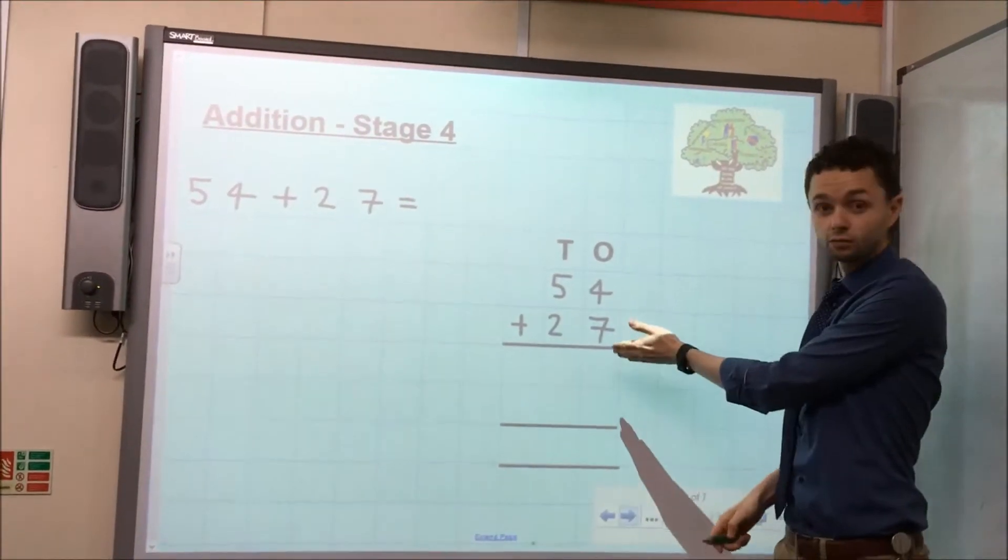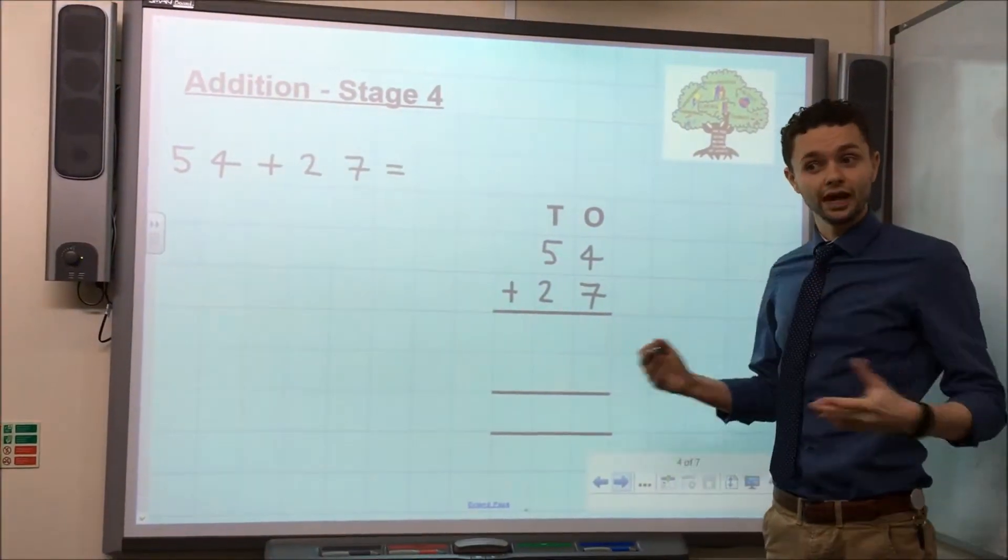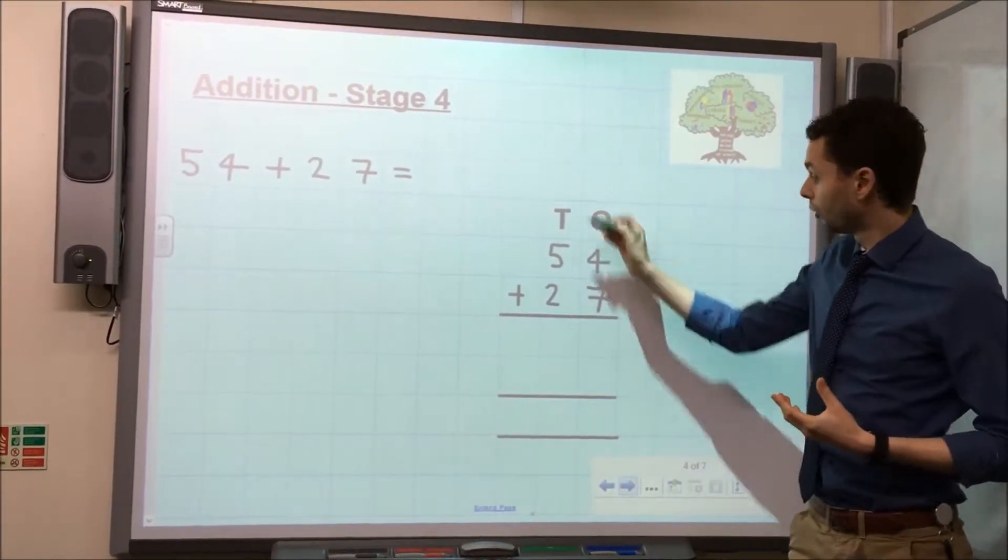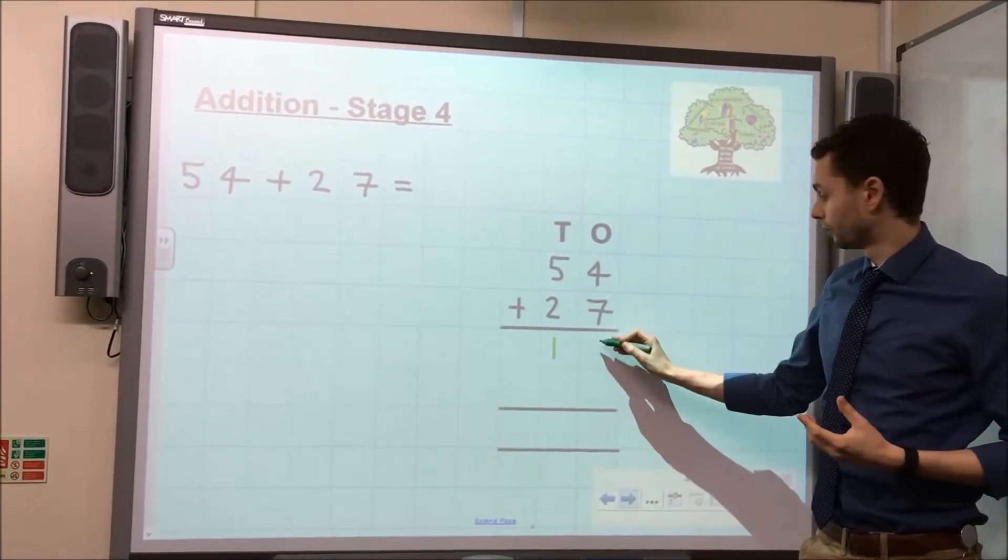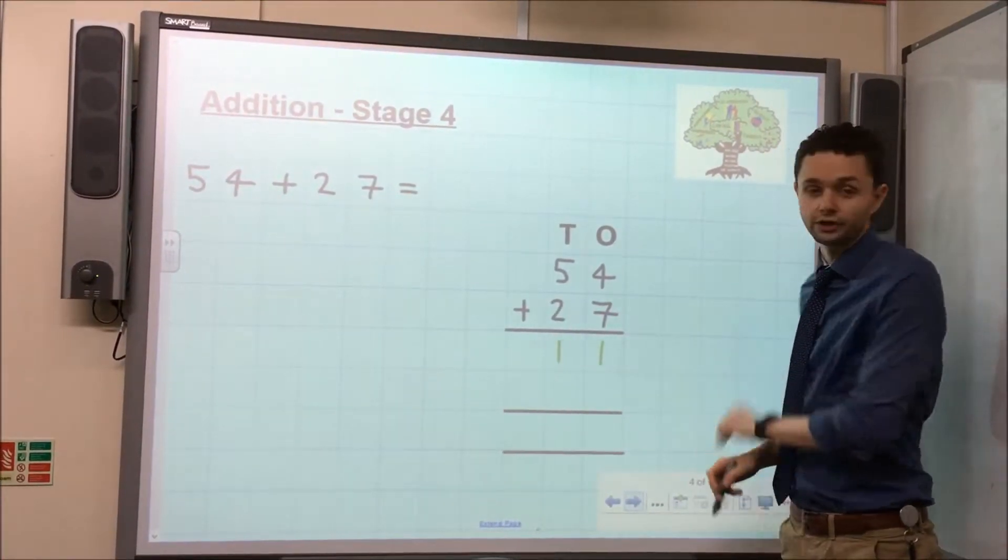So, we take our seven ones, the four ones, we add them together, and that gives us 11, or one 10 and one 1, which we record on this line here.